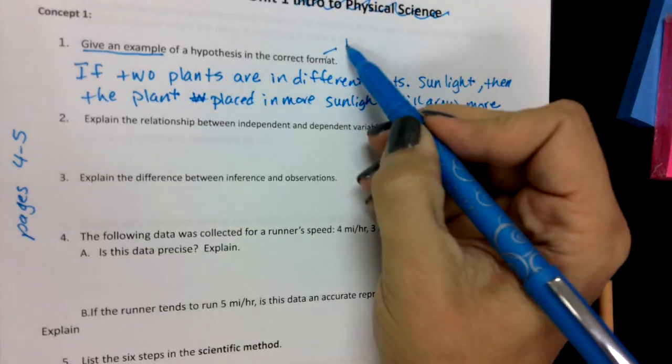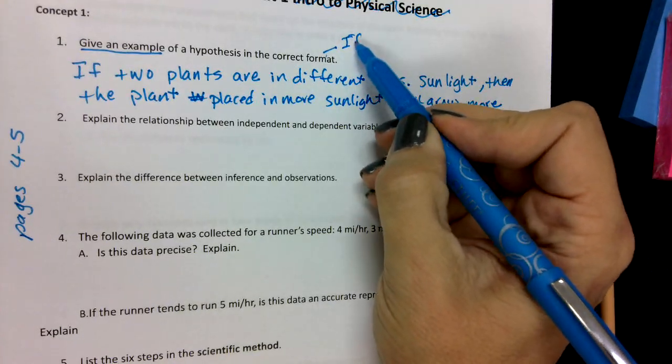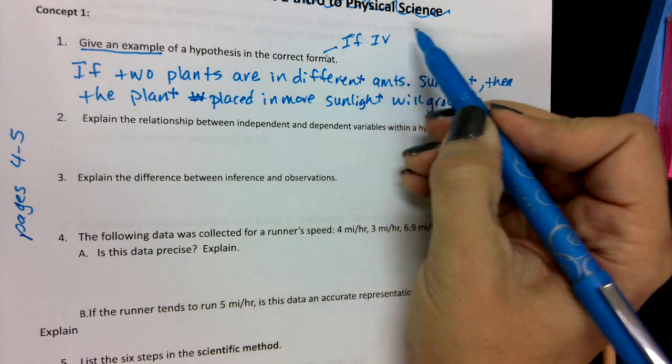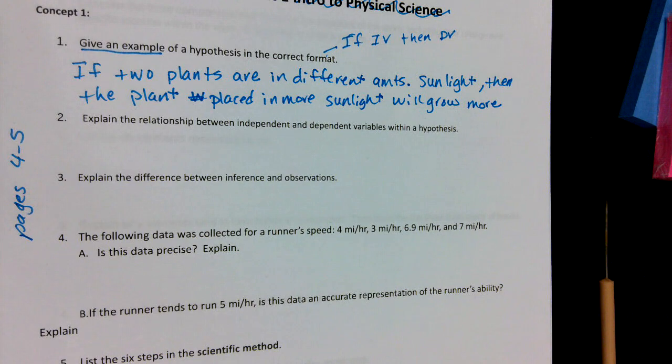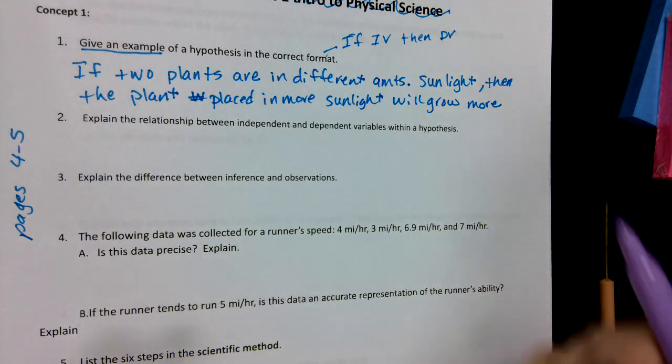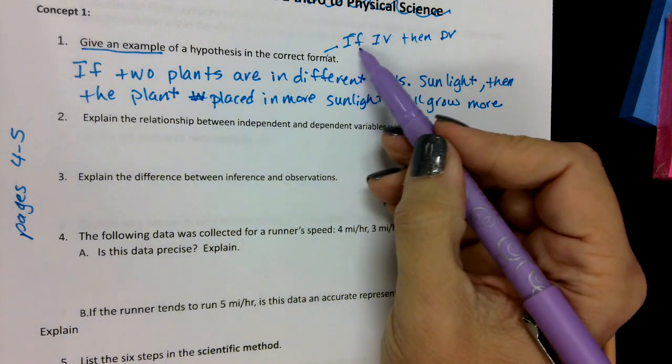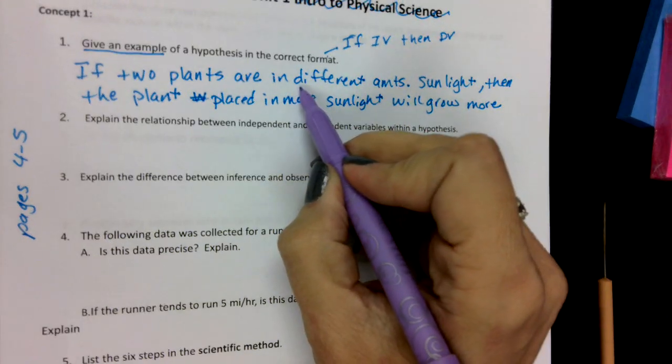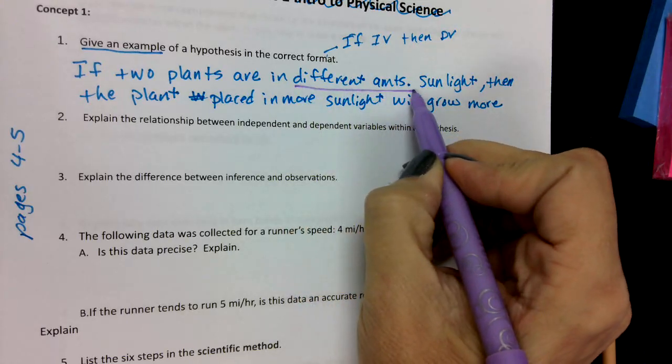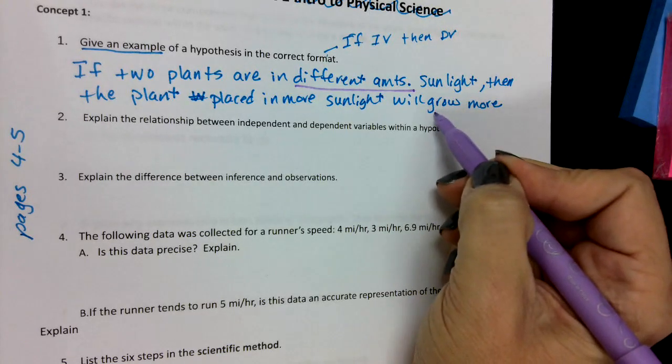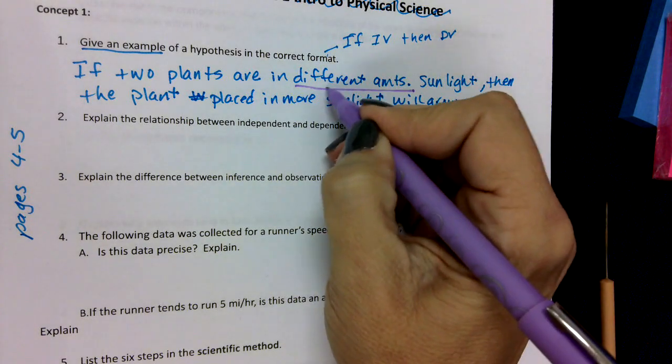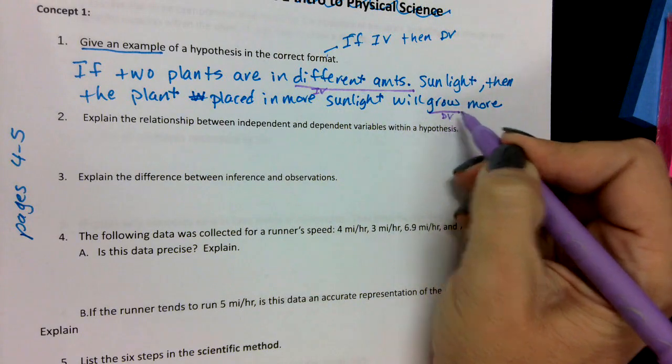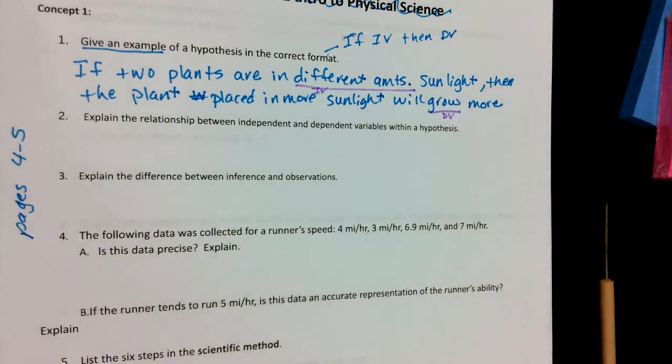So just a reminder, hypothesis. When it says correct format, it's if—you don't have to write this part—if independent variable, then dependent variable. So I think on the test you just have to pick out a hypothesis. I don't have you type one in. So you're going to look for when it starts with if. But just so you know, here's the independent variable and then here is the dependent variable. So you just needed to write an example.